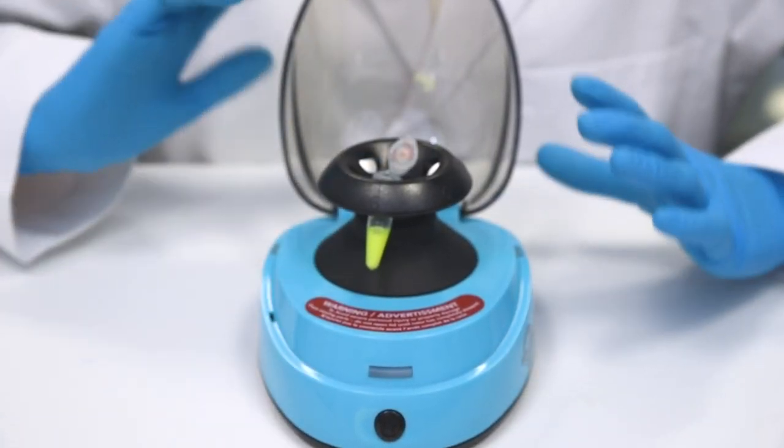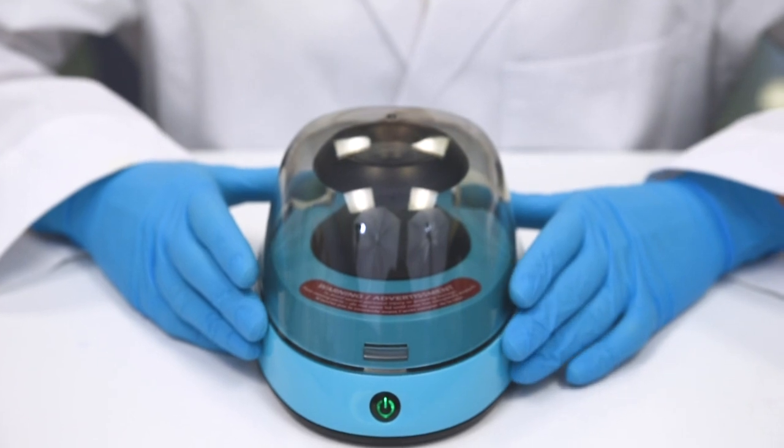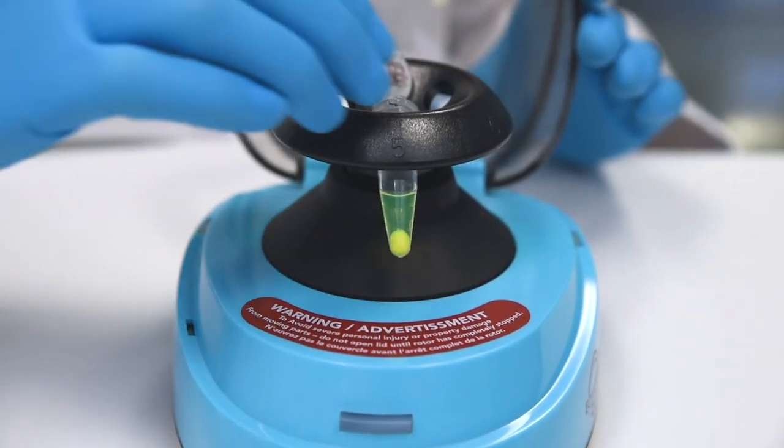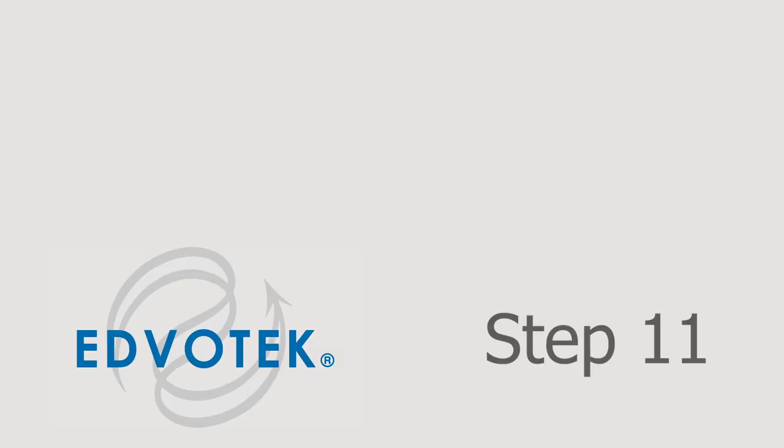Step 10: Centrifuge the tube in a microcentrifuge for 10 minutes at maximum speed. Make sure you have balanced your tube before starting the microcentrifuge.